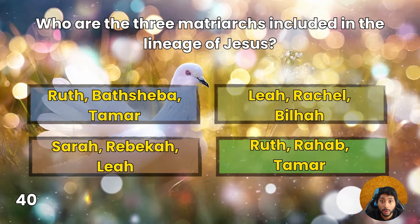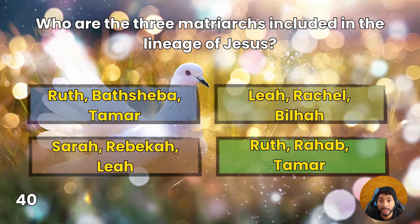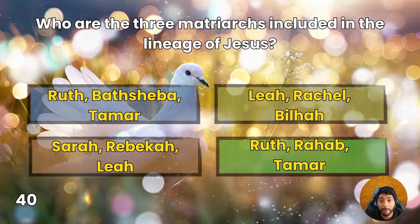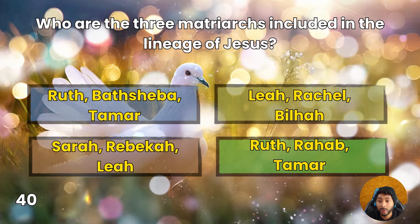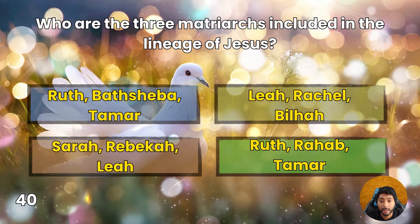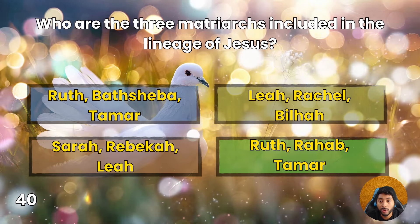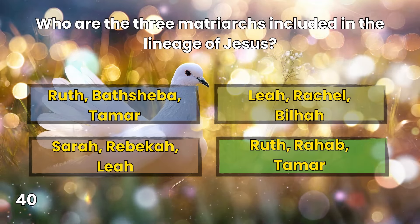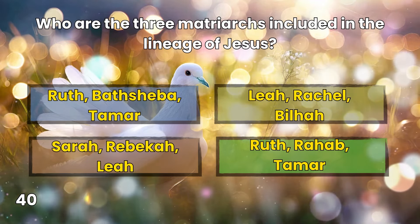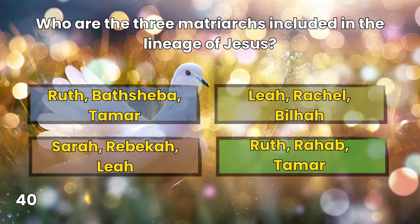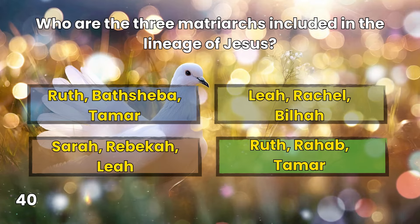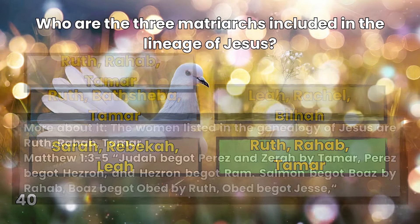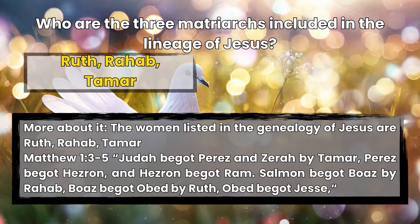Question 40: Who are the three matriarchs included in the lineage of Jesus? Ruth, Bathsheba, Tamar; Leah, Rachel, Bilhah; Sarah, Rebecca, Leah; or Ruth, Rahab, Tamar? Ruth, Rahab, Tamar. Matthew 1:3-5 — Judah begot Perez and Zerah by Tamar. Salmon begot Boaz by Rahab. Boaz begot Obed by Ruth.